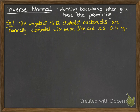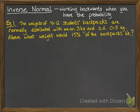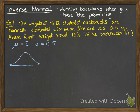Let's have a look at an example. The weights of backpacks are normally distributed with mean 3 kilos and standard deviation 0.5 kilos. Above what weight would 15% of the backpacks lie? So we've got a mean of 3 and standard deviation 0.5 — those are our mu and sigma values. It's normally distributed, so it looks like this. We have some value w, where 15% of the backpacks lie above that weight.